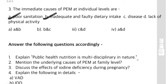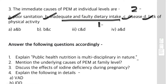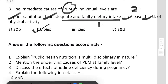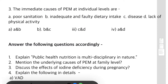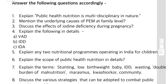The third MCQ: the immediate causes of PEM at individual level — whether it is a) poor sanitation, b) inadequate or poor quality dietary intake, c) disease, or d) lack of physical activity. PEM is Protein Energy Malnutrition caused by deficiency of nutrients — so dietary intake and disease are both causes. If a person is diseased, protein and energy will be absorbed less. The answer is b and c.